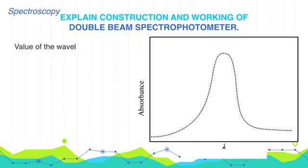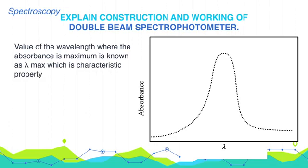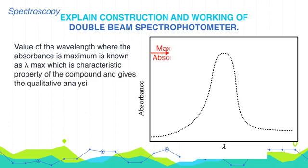Value of wavelength where the absorbance is maximum is known as lambda max, which is characteristic property of the compound and gives the qualitative analysis of the sample.